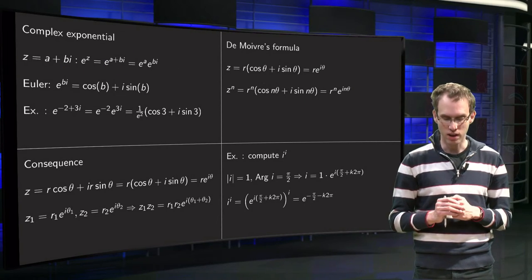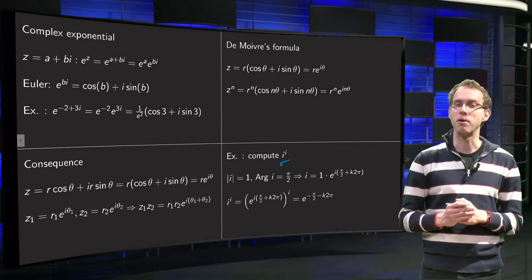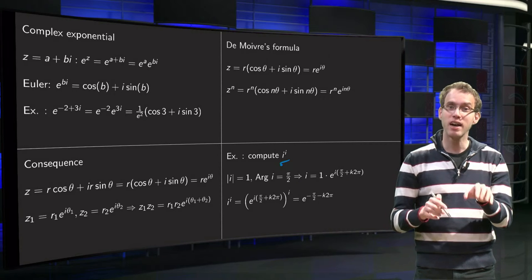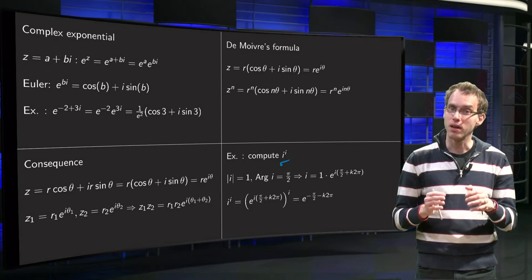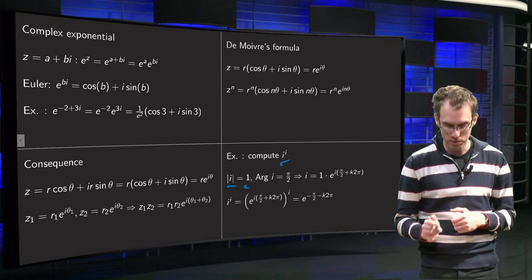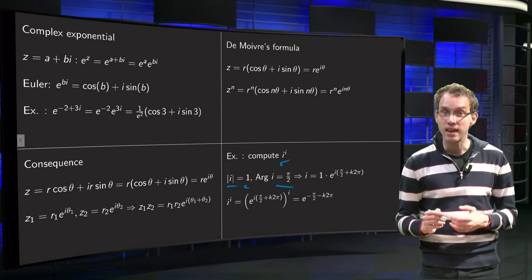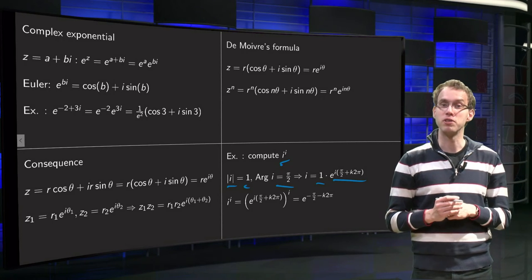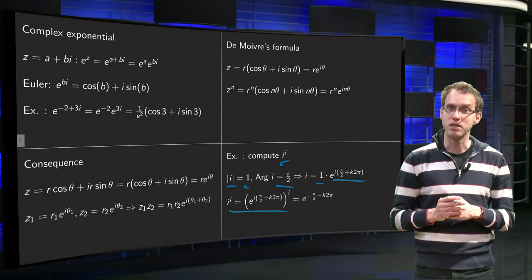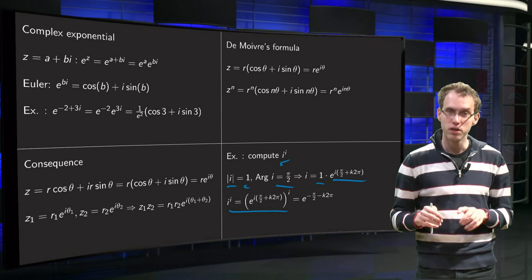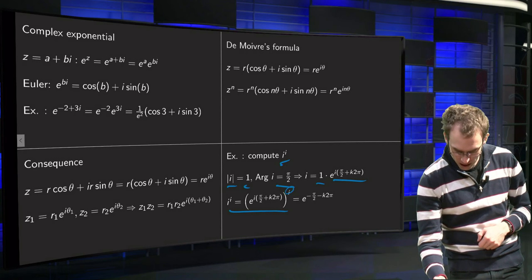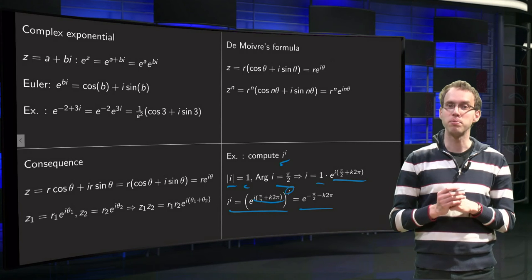Finally, let's apply this to the curious expression i to the power i. The trick is to write the base i as a complex exponential. The norm of i is 1 and its principal argument is π/2, so we can write i as e to the power i(π/2 + 2kπ), where k is an integer. Raising this to the power i, we multiply the exponents, giving e to the power (−π/2 − 2kπ).